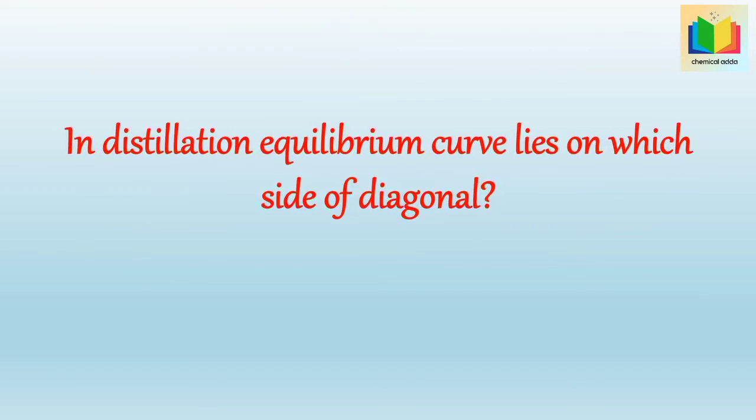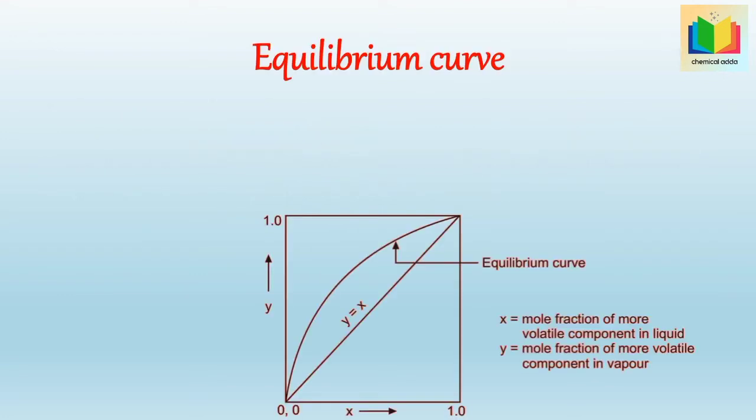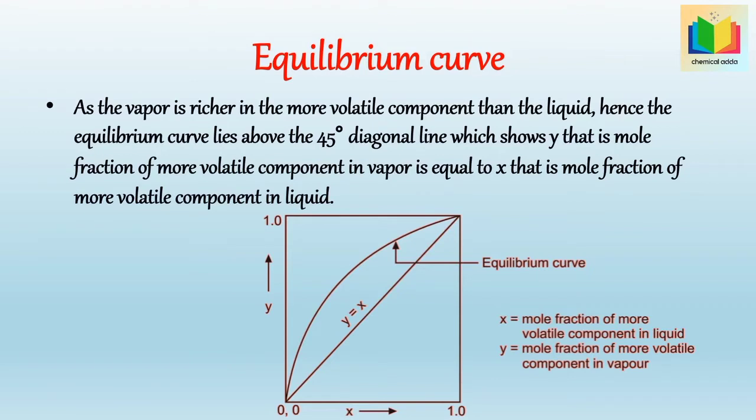Next question: in distillation, the equilibrium curve lies on which side of the diagonal? As the vapor is richer in the more volatile component than the liquid, the equilibrium curve lies above the 45-degree diagonal line. This 45-degree diagonal line shows Y (mole fraction of more volatile component in vapor) is equal to X (mole fraction of more volatile component in liquid).